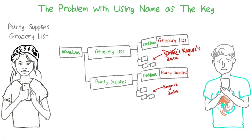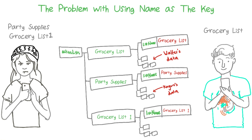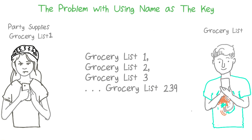Walter would probably not be super thrilled to find that his list has been randomly overwritten. If we had permissions that kept users from overwriting other users' data, then Kugure would be denied from writing a list called grocery list. So maybe she'd make something like grocery list one, and the next person could make grocery list two and grocery list three and so on. This isn't the best user experience — it's kind of silly.